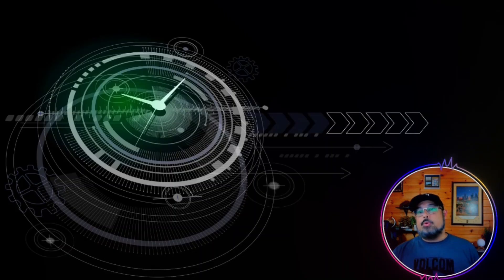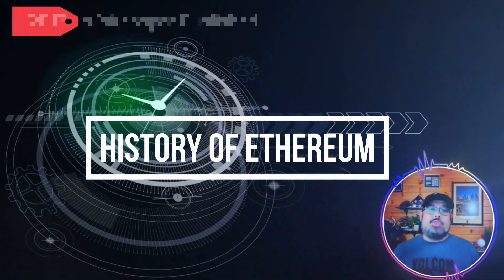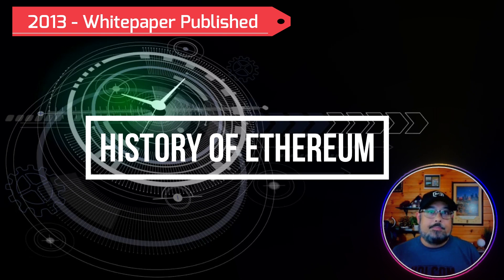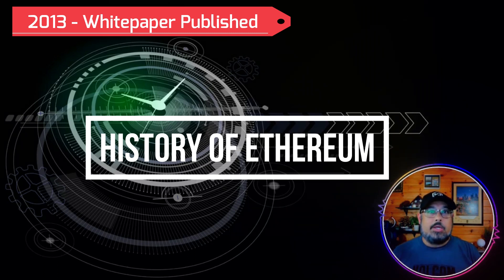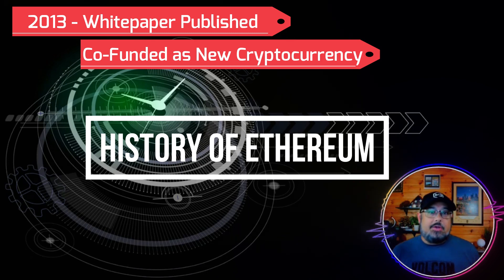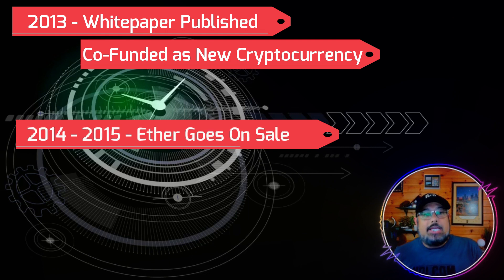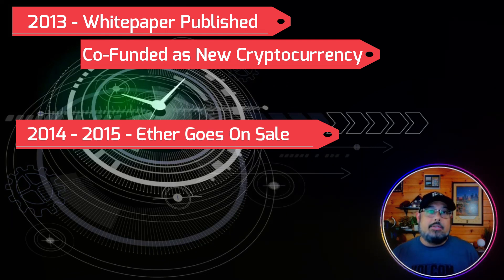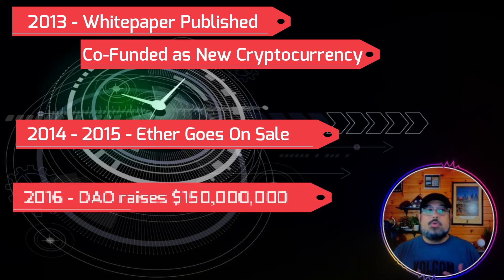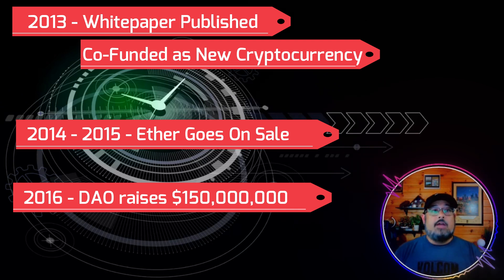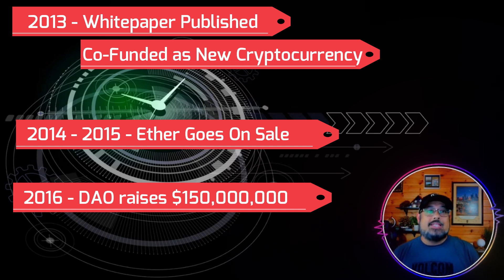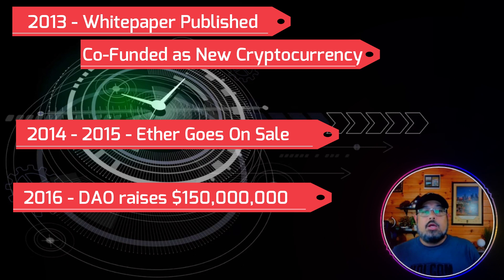Let's go through the history of Ethereum. In 2013, Vitalik Buterin published the Ethereum white paper. After failing to convince the Bitcoin community to support decentralized apps on Bitcoin, Vitalik co-founded Ethereum as a new cryptocurrency. In 2014-2015, Ether officially went on sale and people could buy it with Bitcoin. In 2016, the DAO raised $150 million to provide a new decentralized business model for organizing companies. Unfortunately, hackers used an exploit to steal one-third of the DAO's funds, which led to Ethereum doing a hard fork to restore the lost funds.